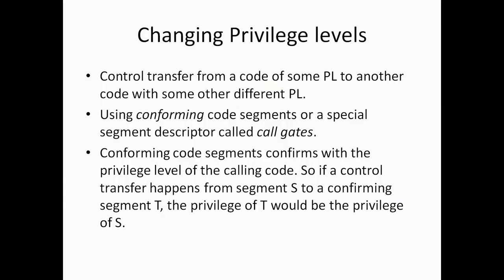Let us understand this in a proper perspective. When we actually do an analysis of an operating system in terms of security, specifically from an x86 point of view, these are the things that come very deep into it. There is a control transfer from a code of some privilege level to another code with some other different privilege level. We can use confirming code segments for doing this, or a special segment descriptor called call gates.